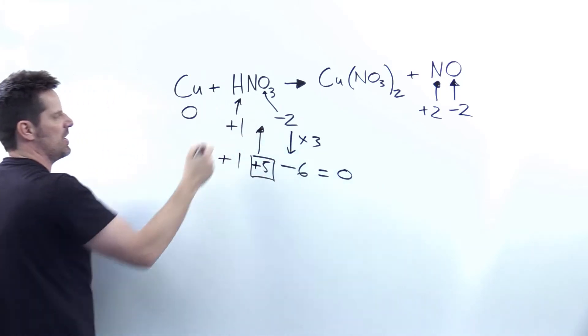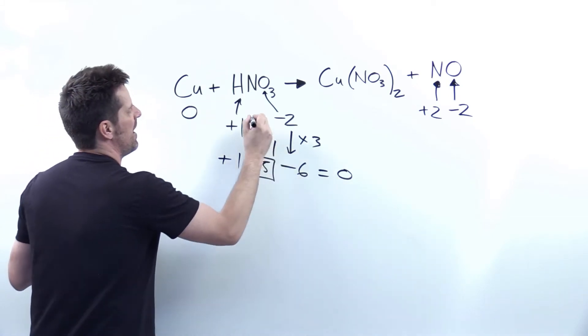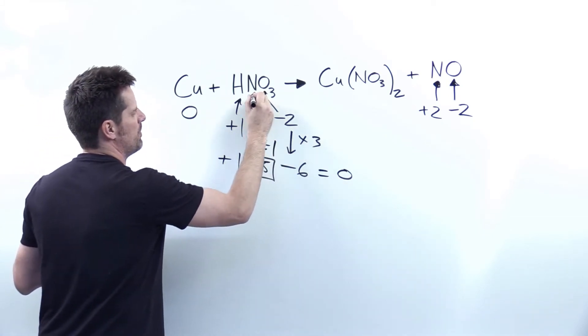To go backwards to the individual nitrogen's oxidation number, I just divide that plus five by the total number of nitrogens in this formula, which is, of course, just one, and that gives me a plus five oxidation number for my nitrogen.